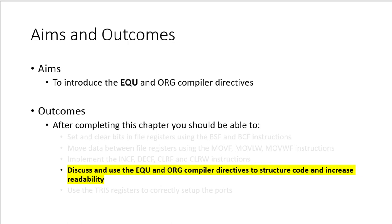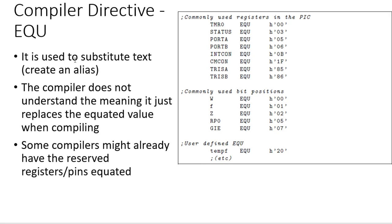The compiler directive equate is essentially a method to substitute text. The compiler does not understand the meaning of whatever you are trying to convey — it simply replaces the equated value when compiling. It's important to understand that some compilers might already have some of the reserved words and registers pre-equated, but that will depend on the compiler that you use.